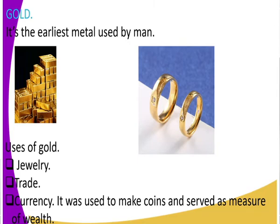Let us look at the uses of gold. First, it is used for jewelry — for example, rings and necklaces. A gold ring is very expensive. It was also used in transatlantic trade as a form of currency. Finally, it was used to make coins and served as a measure of wealth. People in the earliest periods used gold as a measure of wealth.